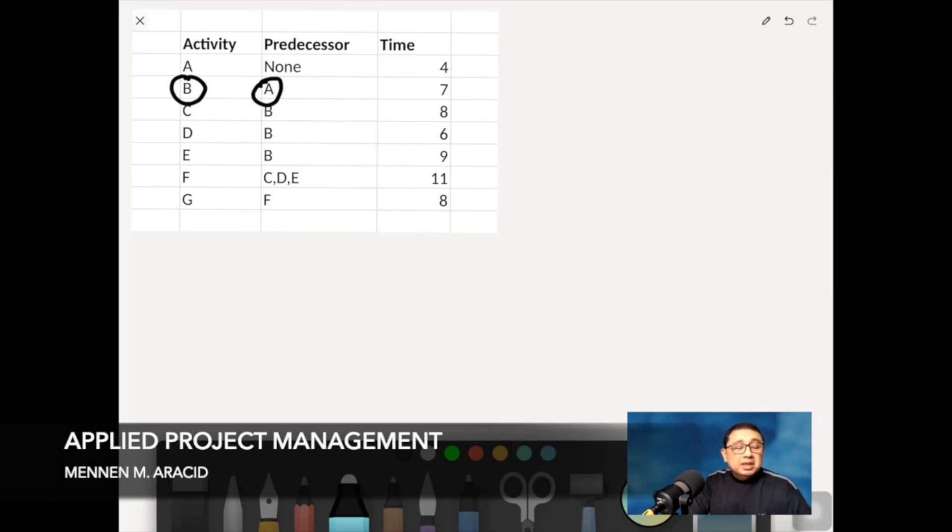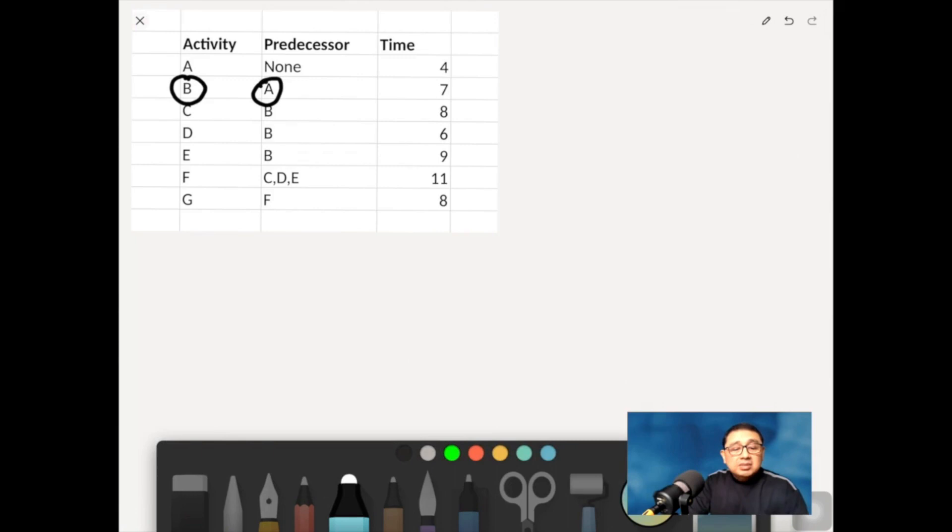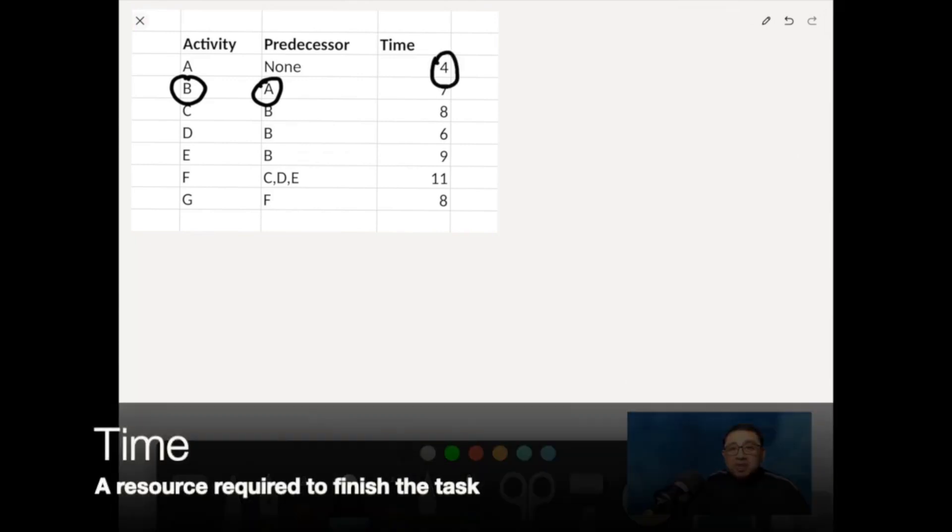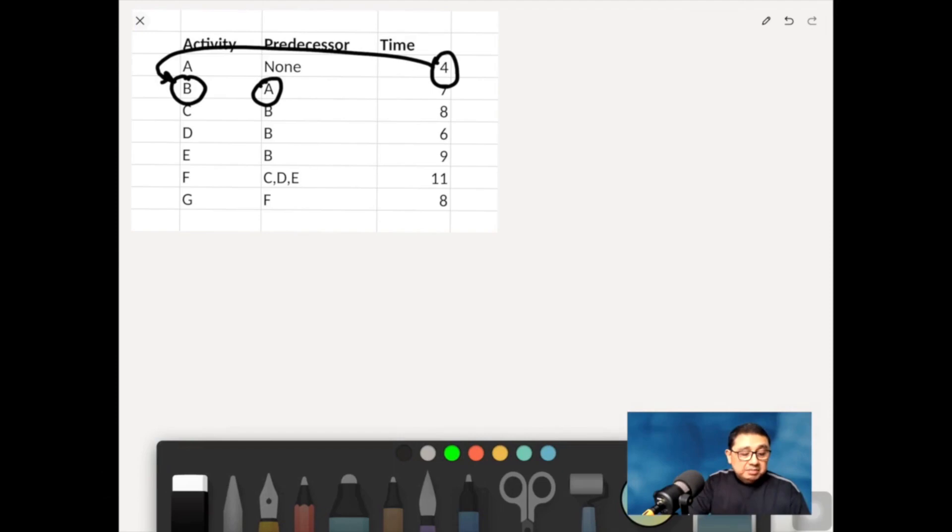And so A has to consume the four units of time first and then only after which B can then begin to proceed. So that's the same logic. And then on the third column, you will also find time estimates for each of the activities in the network.